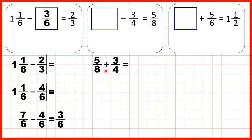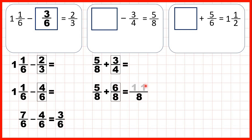To add fractions the denominators need to be the same, so we need to find a fraction equivalent to 3 quarters with a denominator of 8 — that's the same as 6 eighths, because 4 times 2 is 8 and 3 times 2 is 6. Now our denominators are the same, so the denominator stays the same in our answer and 5 plus 6 is 11. We could write our missing number as an improper fraction, 11 over 8, but we can turn that back into a mixed number. 11 divided by 8 is 1 remainder 3, so that's 1 and 3 eighths, because 1 times 8 is 8, then we need 3 more to get to 11.